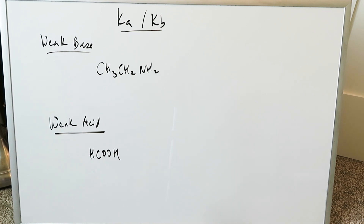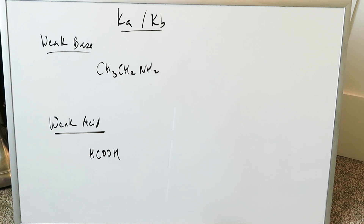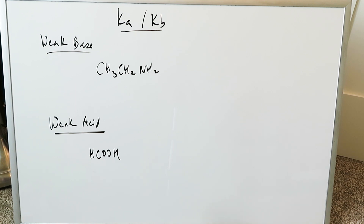Good afternoon, I'm Mr. Esh. Thank you for joining me for this video where we are examining this concept very quickly regarding Ka and KB — acid and base dissociation constants. The Ka and KB is most relevant for titration questions and it also serves as a source of confusion for many students.